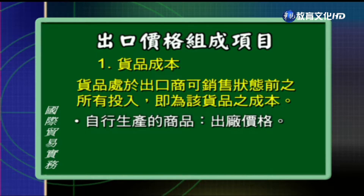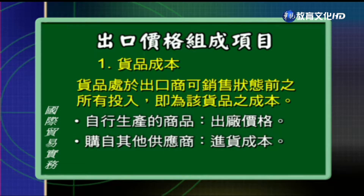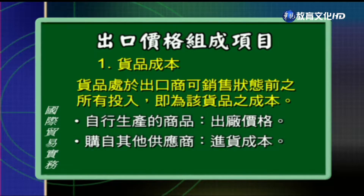因为我们出口商的出口货物可能是厂商自己制造的，也可能是跟其他供应商所购买的。所以如果是自行生产的商品，货品的成本指的就是出厂价格；那如果是跟其他供应商买的，货品的成本指的就是进货的成本。